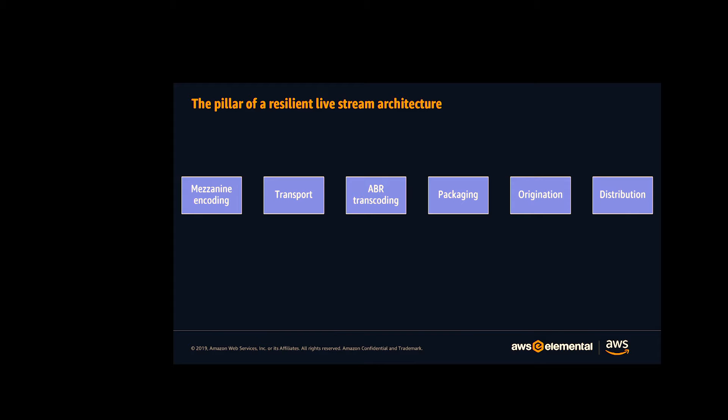You still need to do the ABR encode for OTT delivery, and then packaging and origination — which is commonly a single step but is actually two distinct steps: one is making the content deliverable to the different devices it needs to be playable on, and equally you need somewhere to originate that content that multiple CDNs can pick up from to do the distribution step at the end. Then you've got your clients at the very end of the chain, and the camera at the beginning.